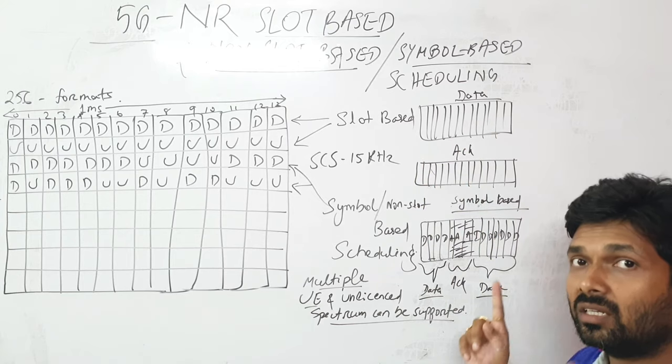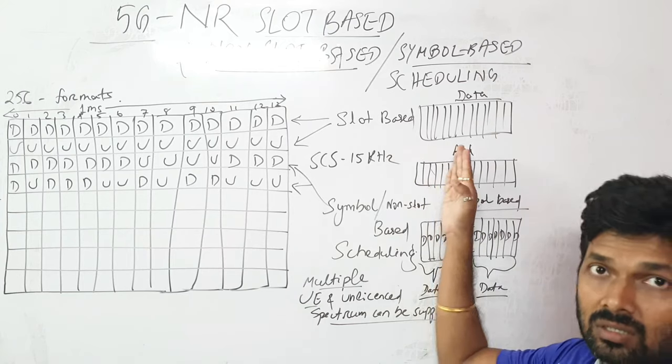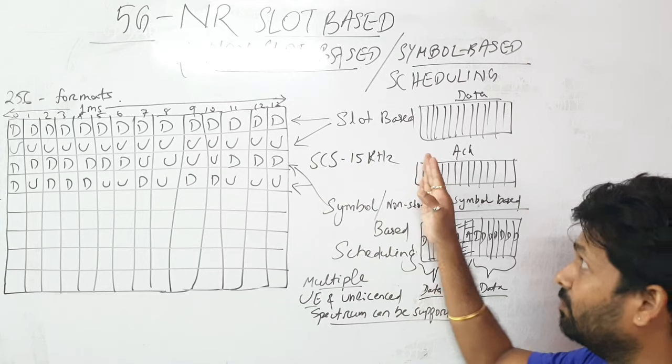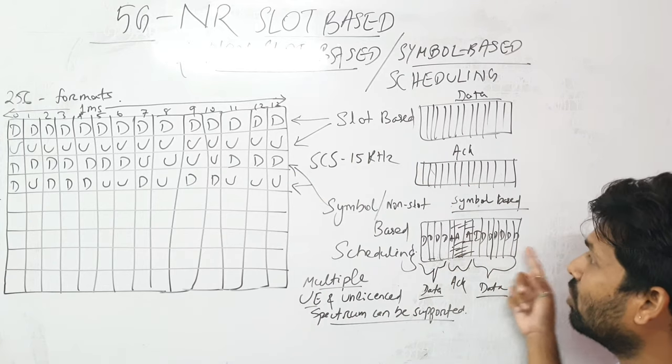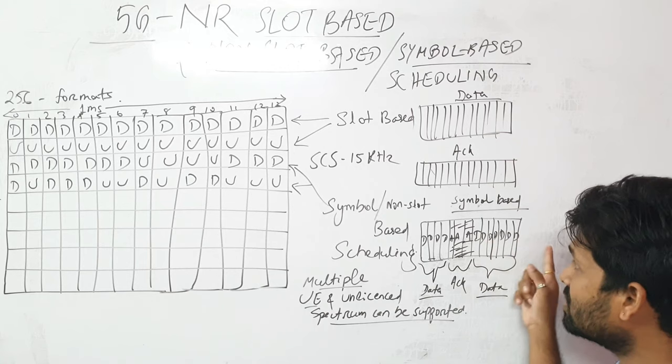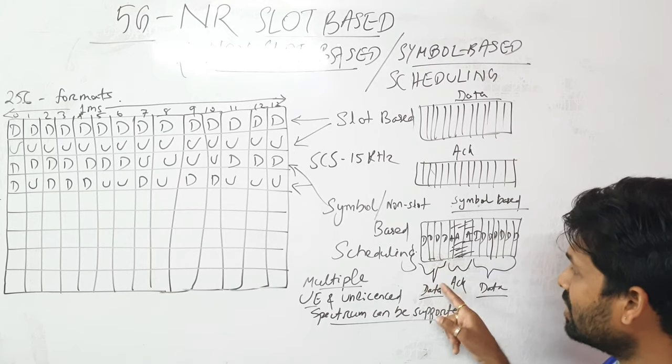That means I have to wait more. But if I'm doing non-slot-based or symbol-based scheduling, in four symbols I'm sending data, I'm receiving acknowledgement in the next three symbols maybe.